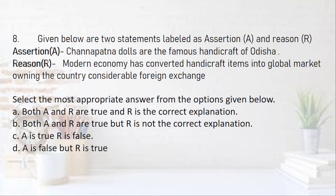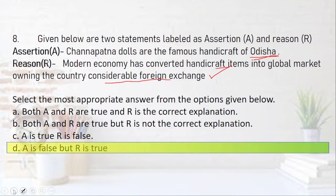Question 8: Assertion — Channapatna dolls are a famous handicraft of Odisha. Think about this again. Reason — Modern economy has converted handicraft items into the global market, earning the country considerable foreign exchange. This reason is correct. But Channapatna dolls are from Karnataka, not Odisha. So A is false and R is true — the right answer is option D. Once you understand the concept, these questions are very simple and you won't go wrong with them.